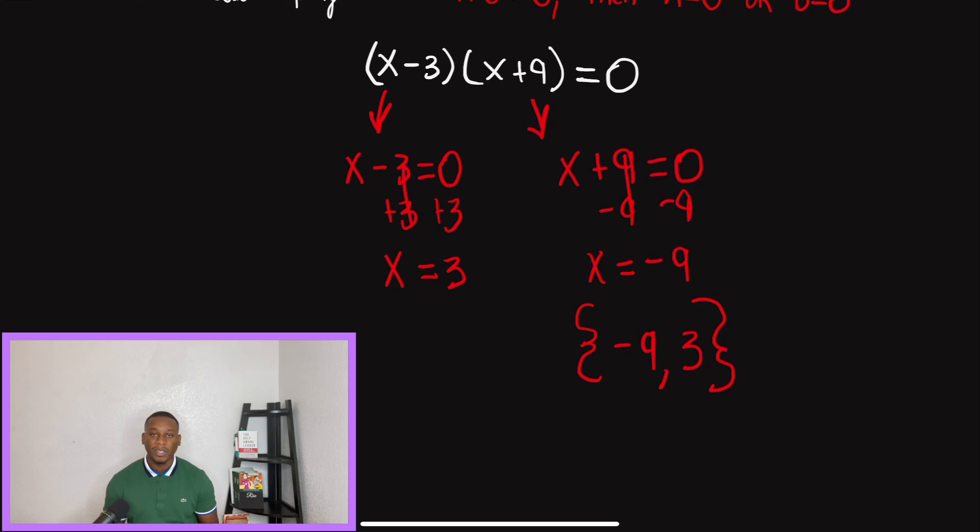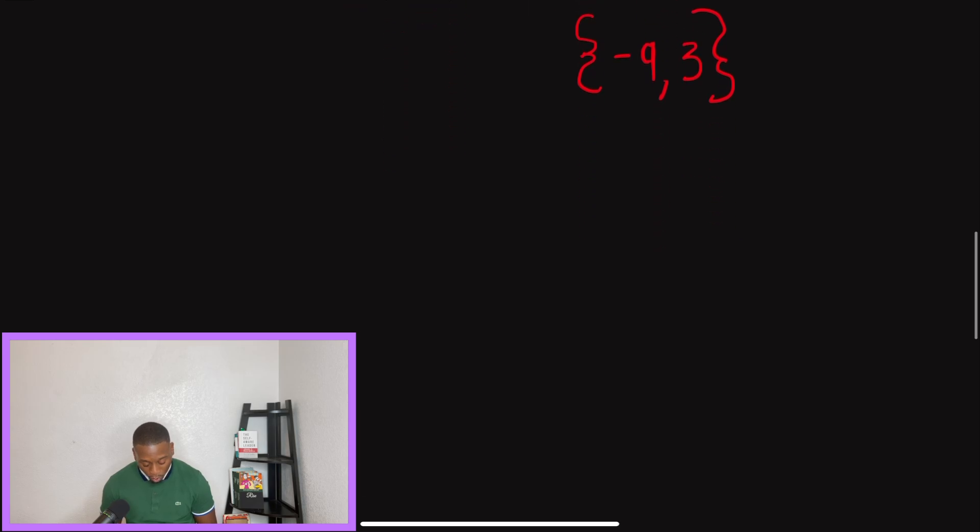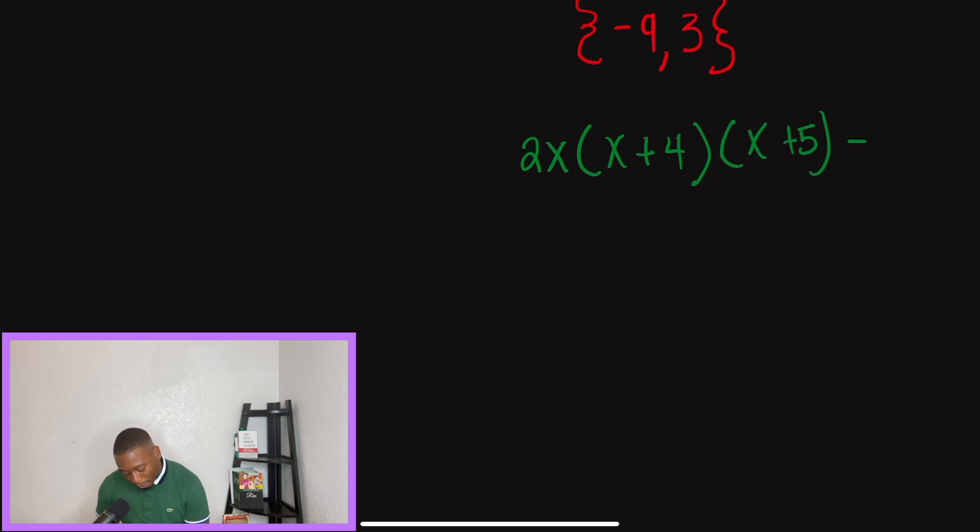Now I want to give you another example where they're asking you to use this property to solve. So in our second problem, it looks a little bit different. We're going to have a factor that is outside of the parentheses, and typically that does throw students off. But I want to tell you guys, same process, same rules apply.